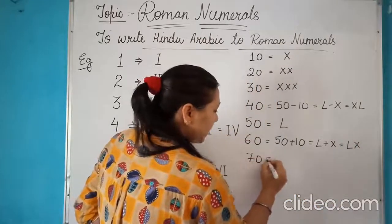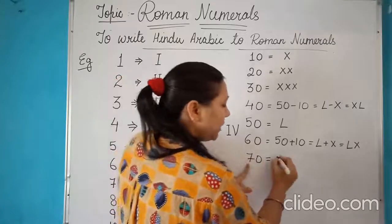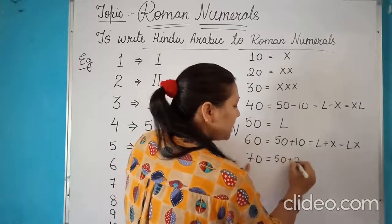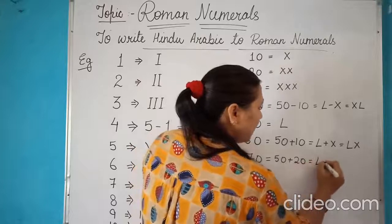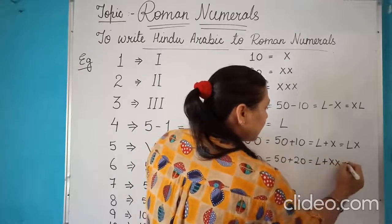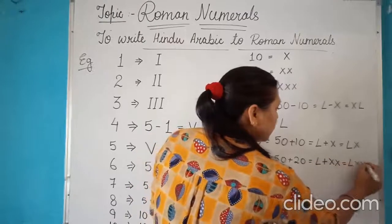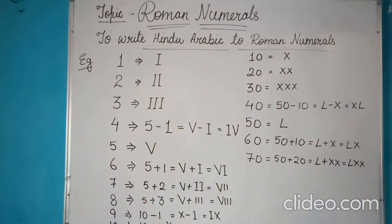Following with the same, the rule for 70, the Roman format for 70 is 50 plus 20. This is L plus XX, which gives us LXX.